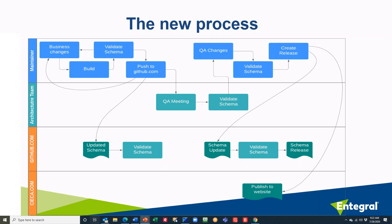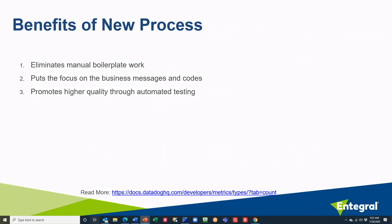Another opportunity for improvement is that during the QA meeting, a spell check of the BMS is done, and that's not baked into the automated build process yet, but it could be. To summarize the benefits of the new process: it eliminates all the manual boilerplate work, puts the focus on the business messages and codes rather than boilerplate, removes tedious work and lets people focus on what's really important — the new messages, codes, and aggregates. And of course, it promotes higher quality through the automated testing that's implemented, and it's also more auditable.